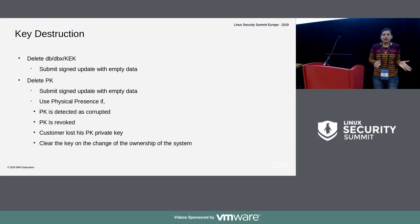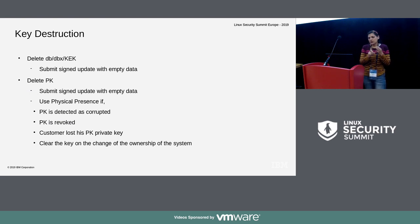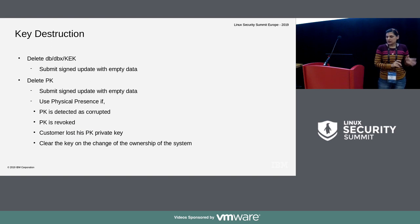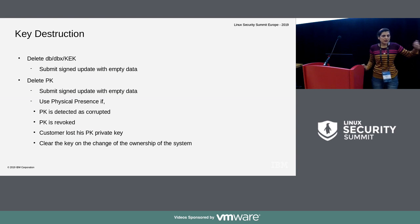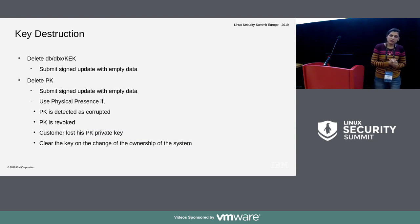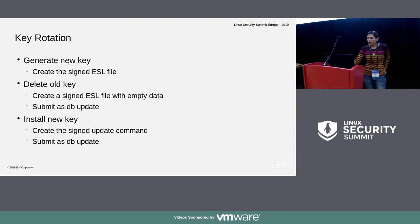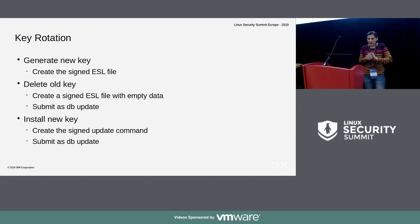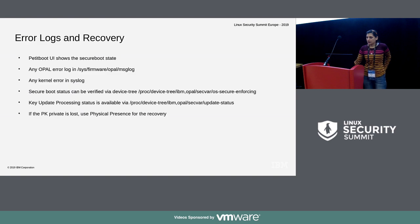For key deletion — in case of revocation or expiry — you delete DBX or KEK by submitting a signed update with empty data. If a valid PK still exists, it can also be deleted by submitting a signed update. Deleting a PK means disabling secure boot, so it's possible to delete PK only if it is validly present in the TPM. If PK is detected as corrupted, its private key is lost, PK is revoked, or if we want to change the ownership of the system, then in all these cases we can only delete or modify it via physical presence. Key rotation involves the full cycle: generate the new key, delete the old key by submitting a signed empty data update, and then install the new key.